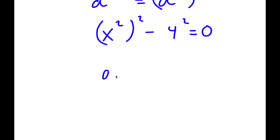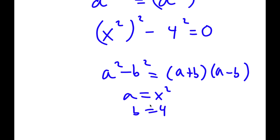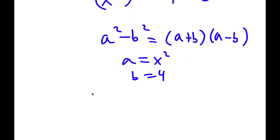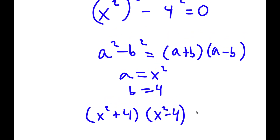Now, if I have something in the form a squared minus b squared, this is equal to a plus b times a minus b. So in this case, a is x squared and b is 4. So I have x squared plus 4 times x squared minus 4, is equal to 0.